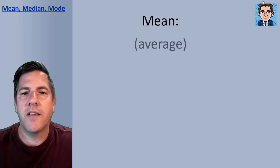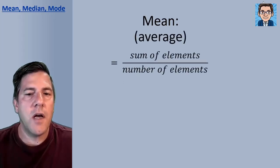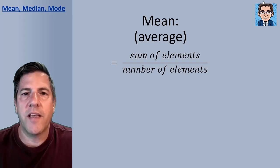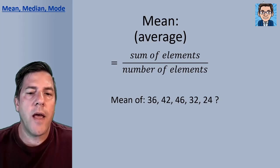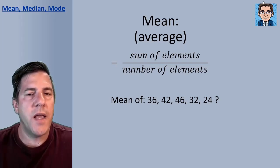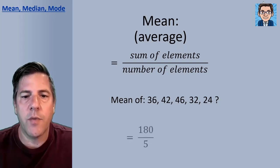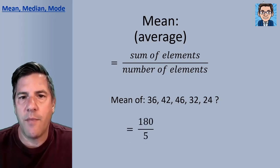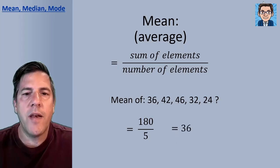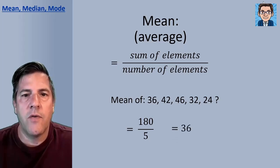Let's first take a look at mean. The mean is going to be the same as the average. So we're going to take the sum of the elements and divide it by the number of elements, the count of the elements. So if we had the mean of this group of numbers, we would add the numbers up and get 180. There are five numbers here, so we go 180 divided by 5, and we get a mean of 36 for this group of numbers.